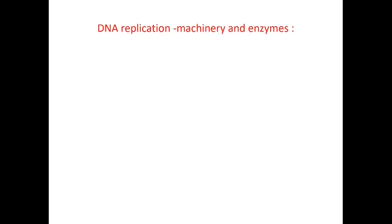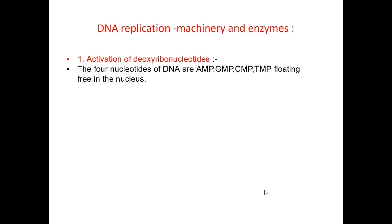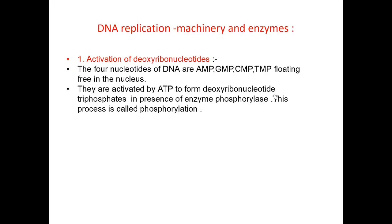Now, DNA replication involves various machinery and enzymes. It takes place by the following steps. The first step is activation of deoxyribonucleotides. The four types of nucleotides of DNA are adenosine monophosphate, guanosine monophosphate, cytosine monophosphate, and thymidine monophosphate. These are found pre-floating in the nucleus and are activated by ATP to form deoxyribonucleotide triphosphates in the presence of the enzyme phosphorylase.